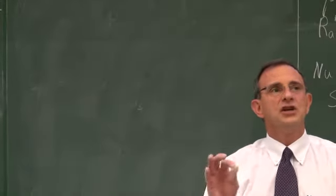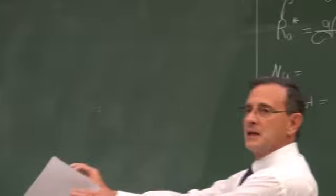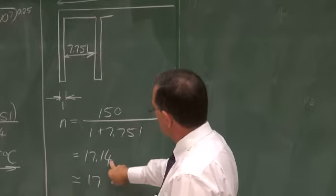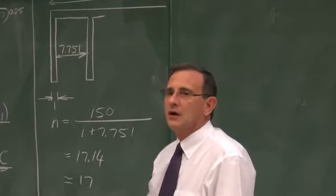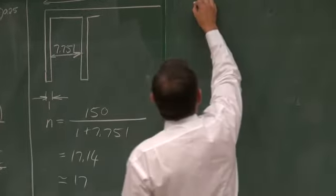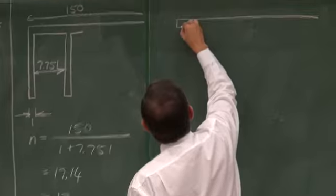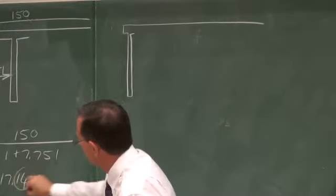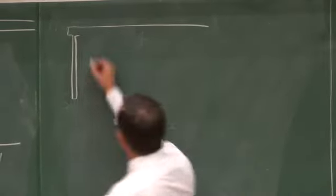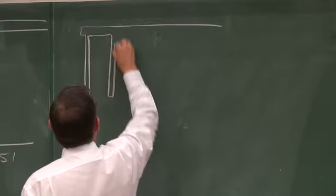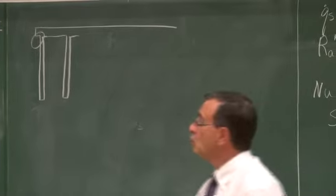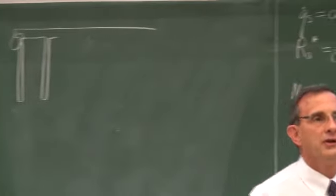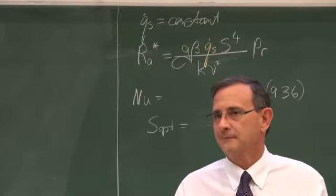Many students have a problem in the test or exam asking where does the first fin start. Once you know there should be 17.14 fins, you can make the engineering decision — maybe start the first one a little bit in to account for the 0.14 remainder and space all the fins from there. In the test and exam it's not going to matter.